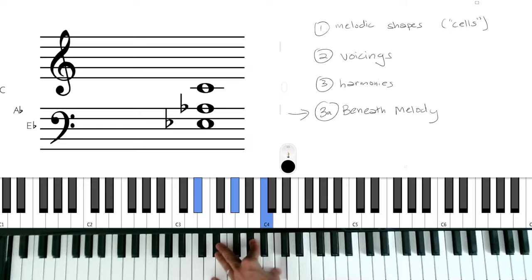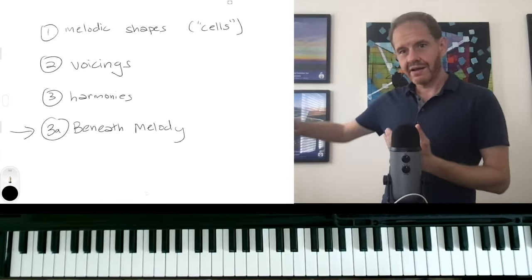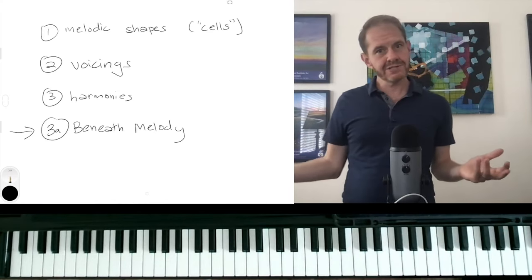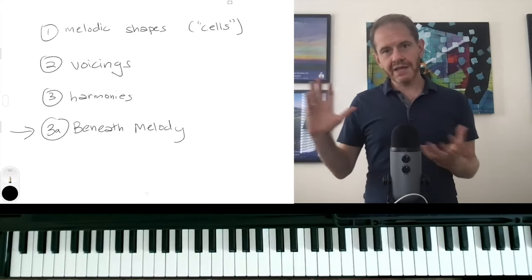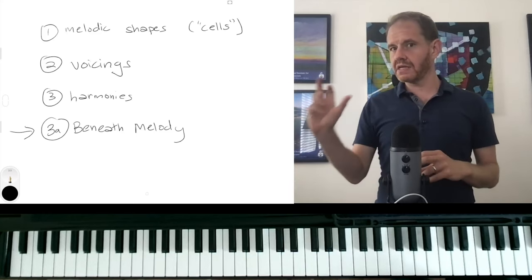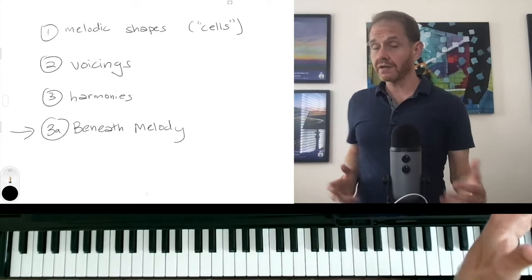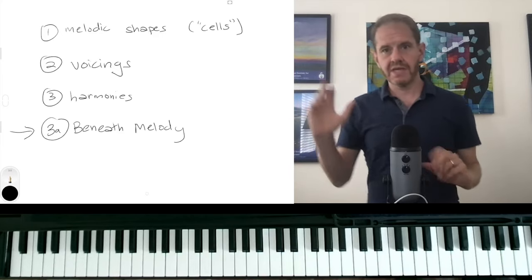And so why do we consider this planing? Because the key center, the overall key center, has never moved from C. But this shape that we're moving is going into all these different key centers because we're maintaining the same interval structure regardless of where we are in the key.